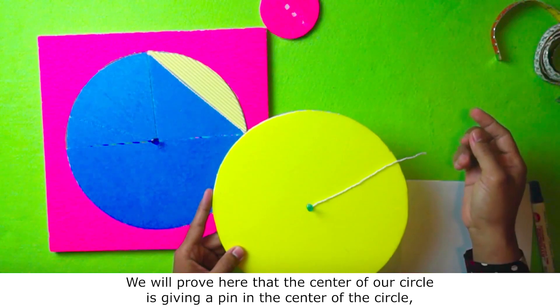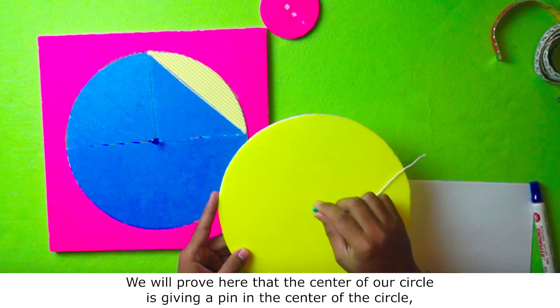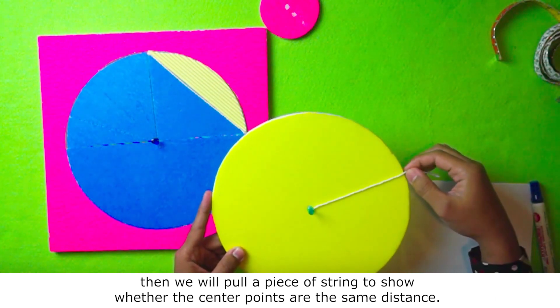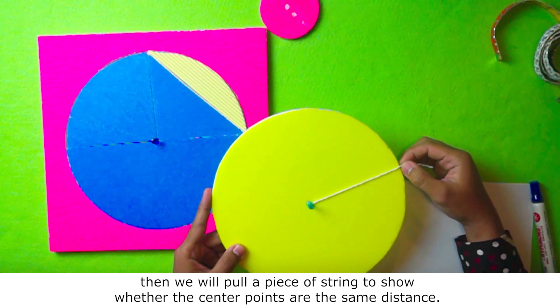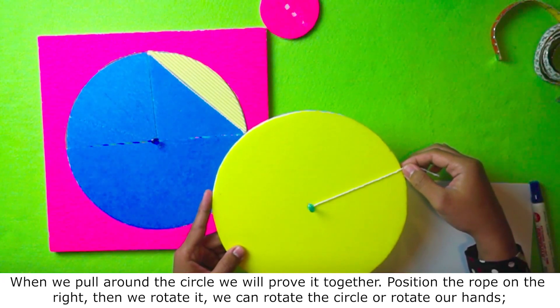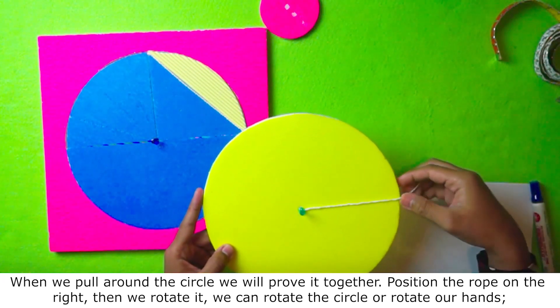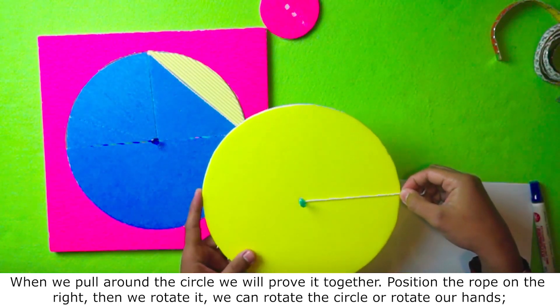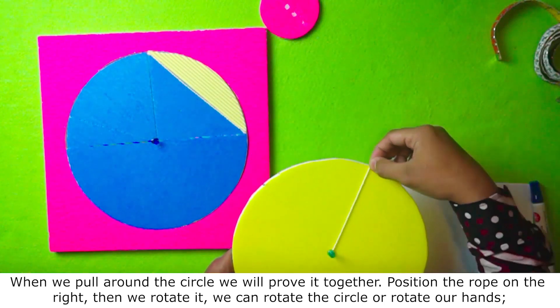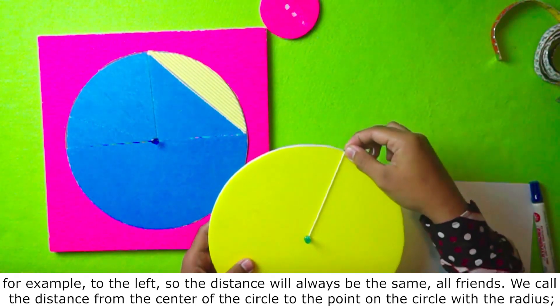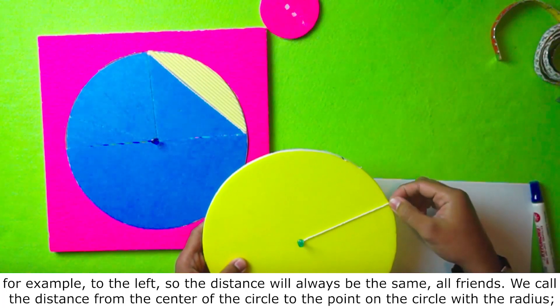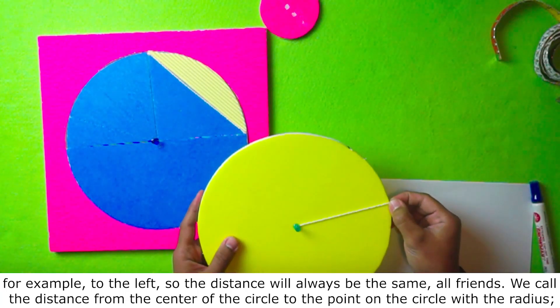We will prove here that the center of our circle is keeping a pin in the center of the circle. Then we will pull a piece of string to show whether the center points are the same distance. When we pull around the circle, we will prove it together. Position the rope on the right. Then we rotate it. We can rotate the circle or rotate our hands. For example, to the left, so the distance will always be the same.